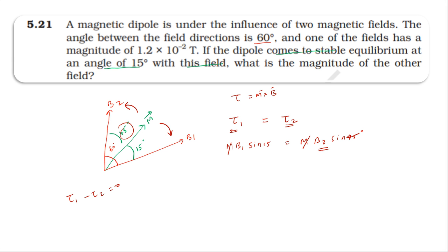Solving for B₂, we get B₂ equals B₁ times sin 15 degrees divided by sin 45 degrees.